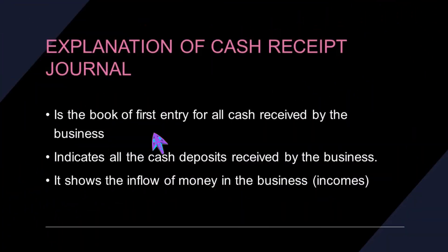What is the cash receipts journal? The cash receipts journal is nothing else but the book of first entry for all cash received by the business. It indicates all the cash deposits received by the business and is also used to show all the inflows of money in the business.